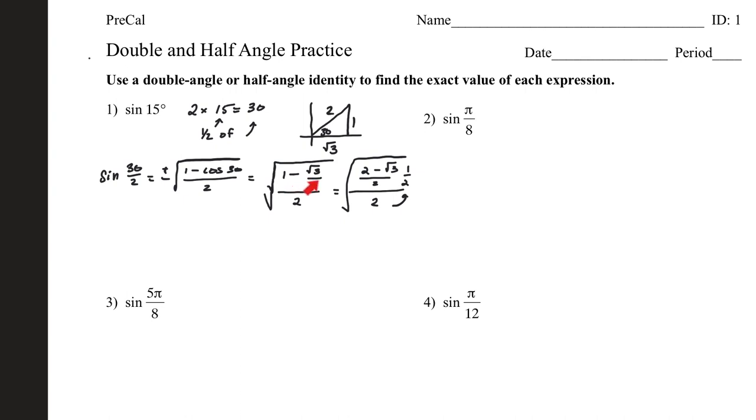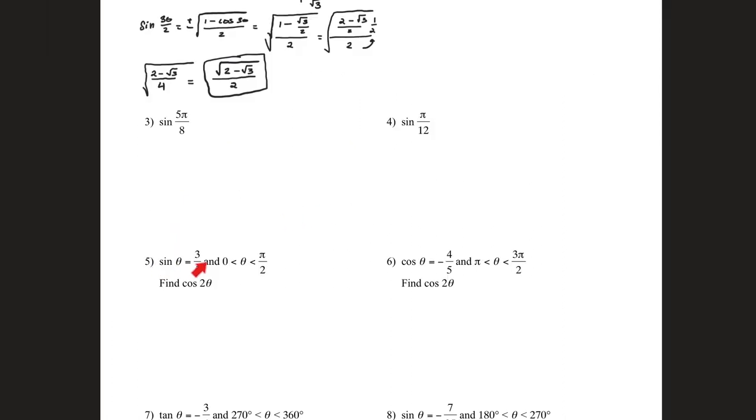And then I'm going to come over here and I am going to basically simplify that. I would turn the 1 into 2 over 2 and combine that. 2 over 2 minus the square root of 3 over 2 allows me to create this fraction. 2 minus the square root of 3 all over 2 because we had a common denominator. All of that over 2 which we're going to multiply by the reciprocal 1 over 2 here and then I'm just going to simplify that back.